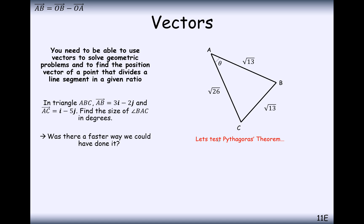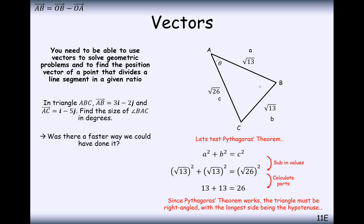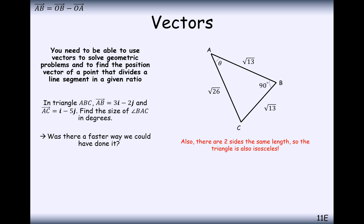Was there a faster way? We could test Pythagoras' theorem. As soon as we worked out those lengths, I could spot that 13 plus 13 gives 26. So applying Pythagoras' theorem shows we have a right-angled triangle. Then using the fact that we have an isosceles triangle, we get 45 degrees in those angles. In general though, you can use the cosine rule to find an angle if you know the three sides.